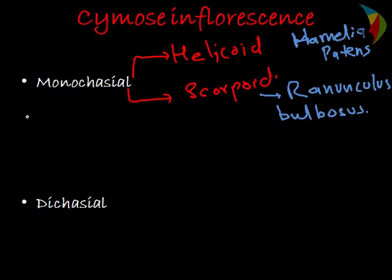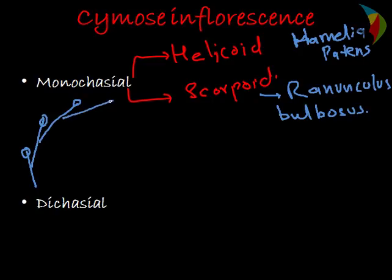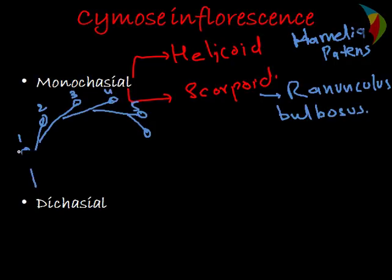I will show the structure of both inflorescences. In the helicoid type, the growth produces the first flower, then the second flower, third flower, fourth, and fifth. As a typical feature of cymose type, each axis ends in a flower, then the other axis also ends in a flower. This is the helicoid type of monochasial inflorescence.